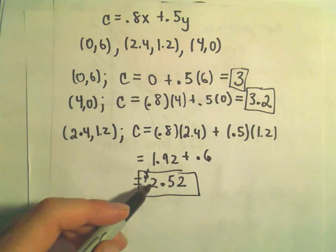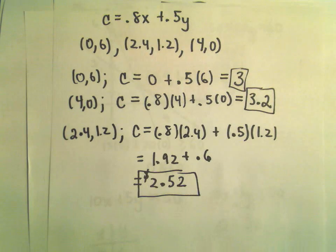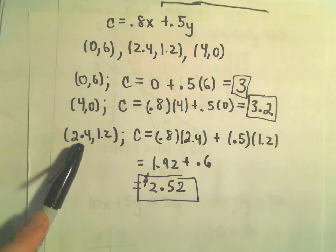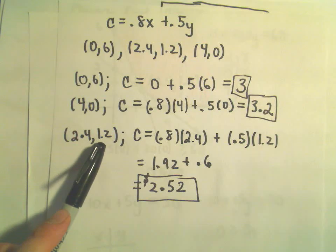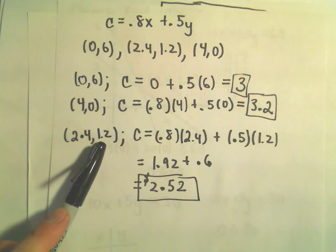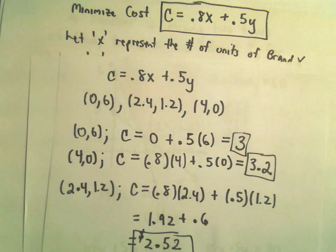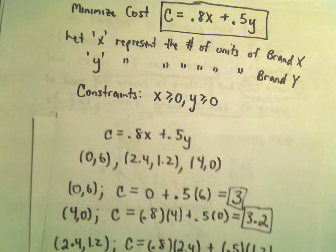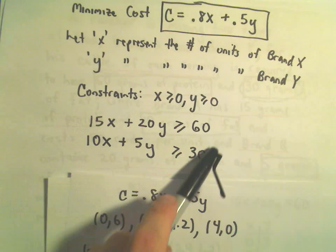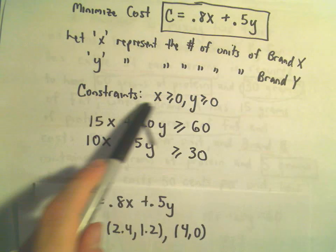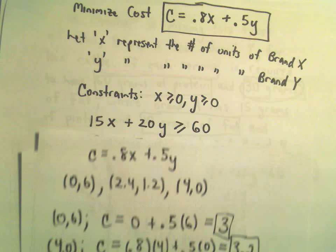We're trying to find the minimum cost. Our three cost values are 3, 3.2, and 2.52. The minimum is 2.52, so the rancher should use 2.4 units of brand X and 1.2 units of brand Y. This minimizes cost while still meeting all the nutritional requirements for his cattle.